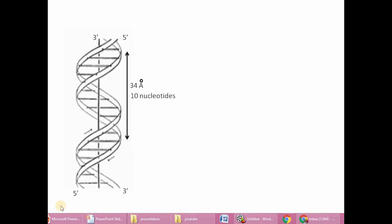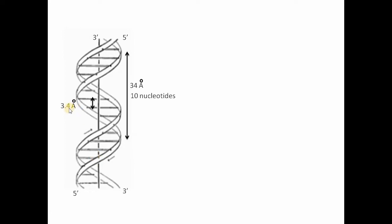According to Watson and Crick, DNA is a double helical structure. The two strands of DNA are anti-parallel — one strand runs 5-prime to 3-prime and the other runs 3-prime to 5-prime. One full turn of DNA is 34 Angstroms, and one turn contains 10 nucleotides. The distance between two nucleotides is 3.4 Angstroms.